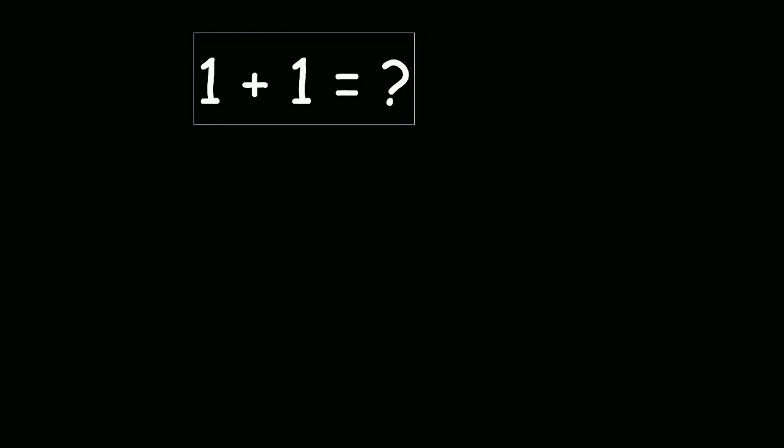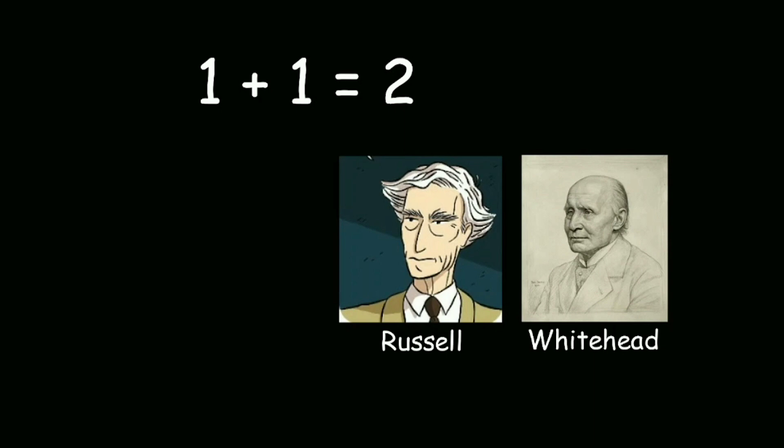Even people who never had any formal education will confidently tell you that the answer is 2. But then why did Bertrand Russell and Alfred Whitehead have to use 370 pages to prove something as obvious as this?